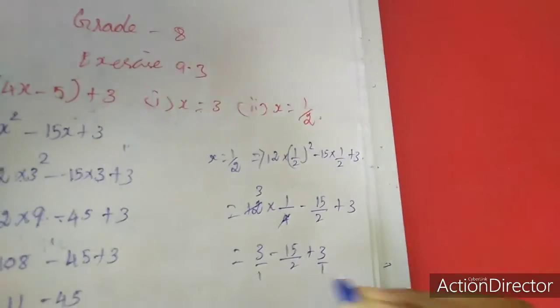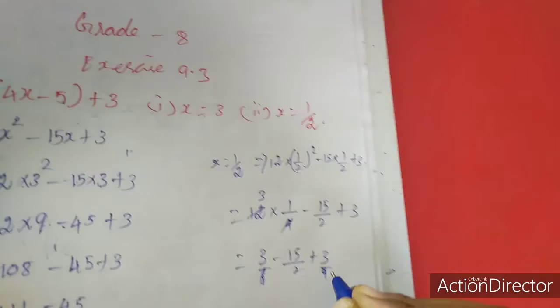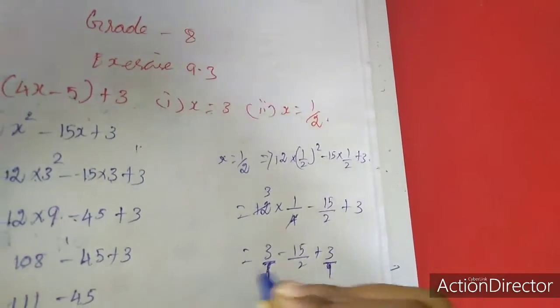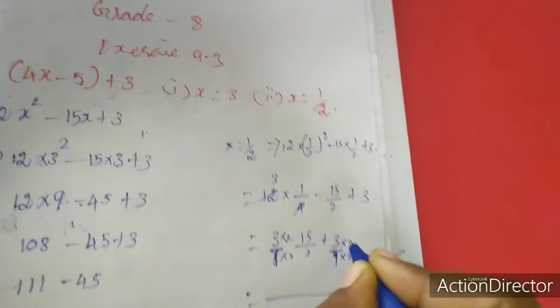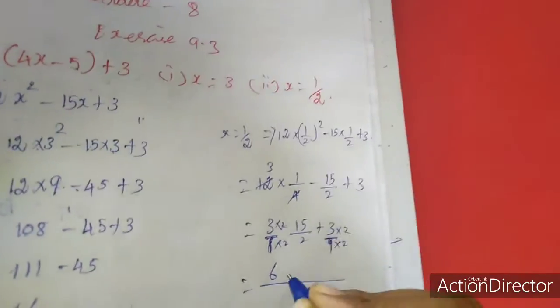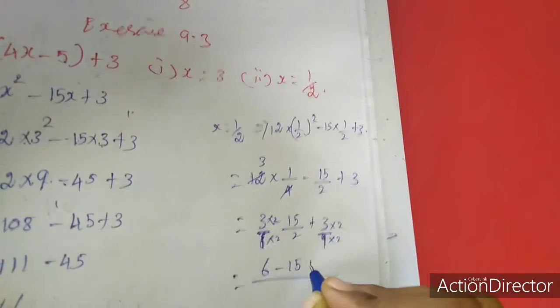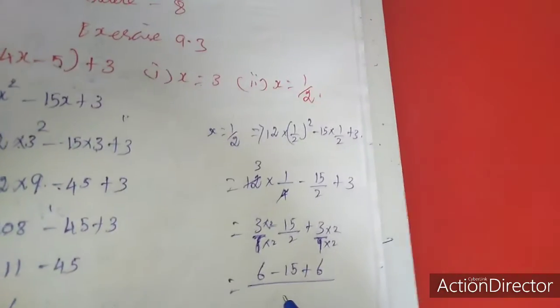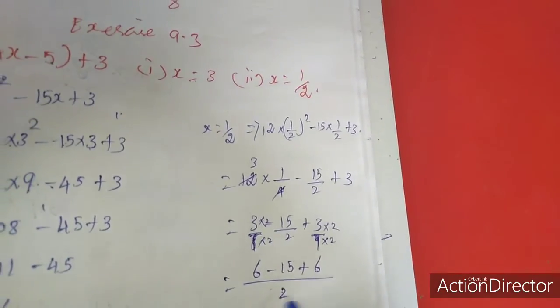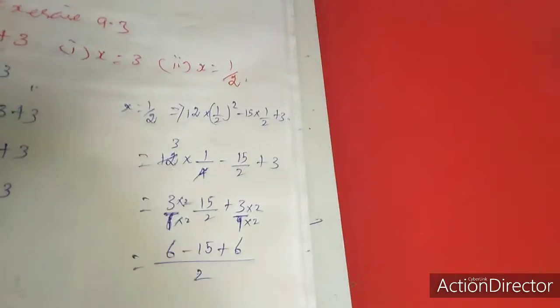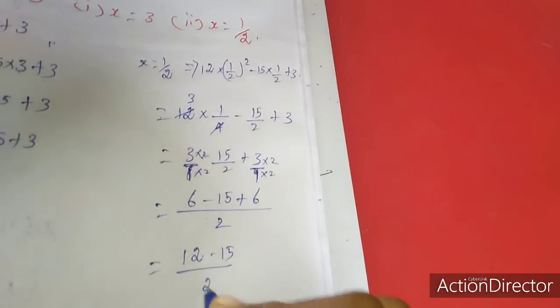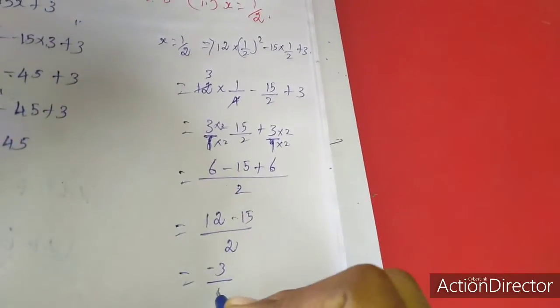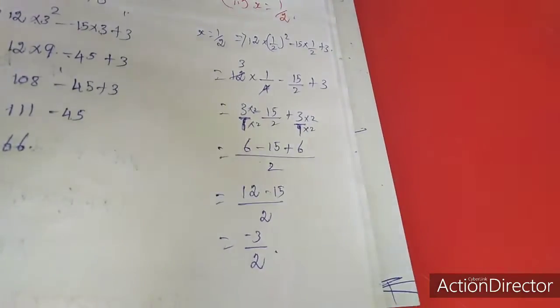Taking common denominator 2, we get (6 + 6 - 15)/2, which is 12 minus 15 by 2. For subtraction, the greater number's sign, so minus 3/2 is the answer.